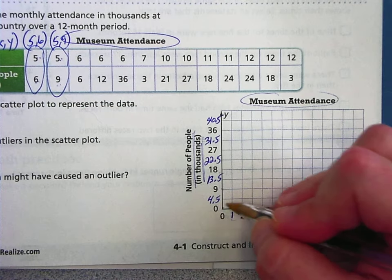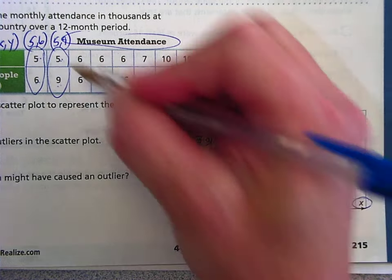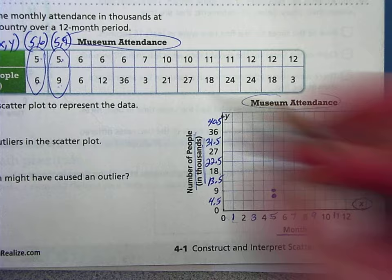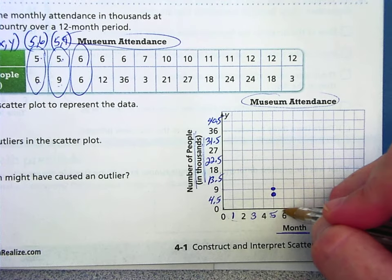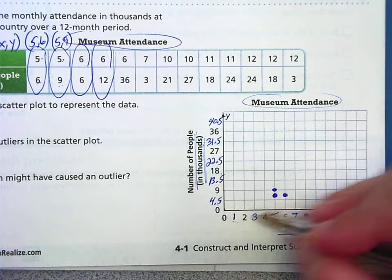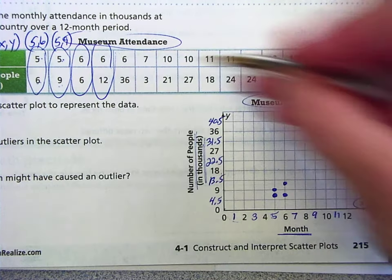So five, six. We're going to go over to five and up to about where six would be. Five, nine. Over five, up to nine. Six, six. Over six, up to six. About right there. Six, 12. Over six, up to 12, which would be about there. Six, 36. Over six, up to 36. Right there.